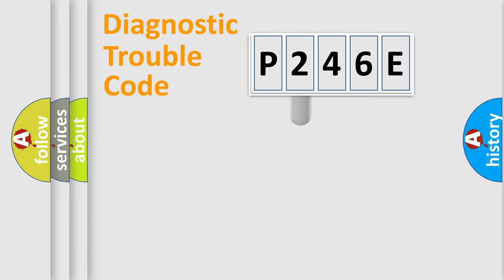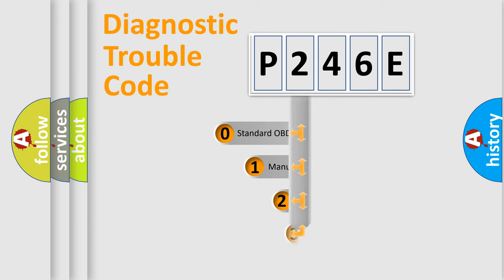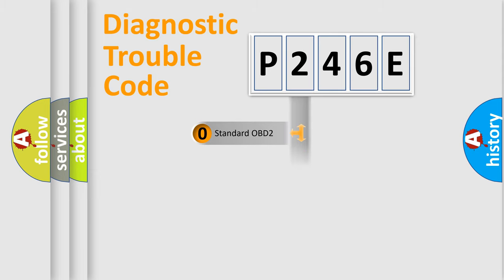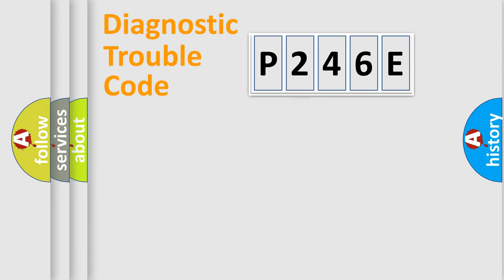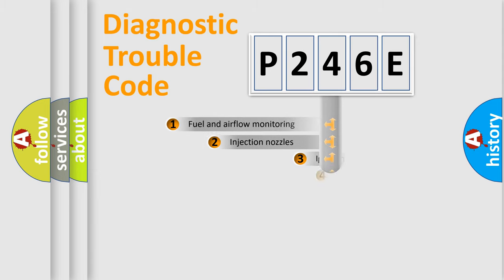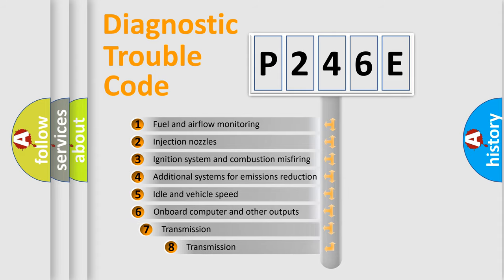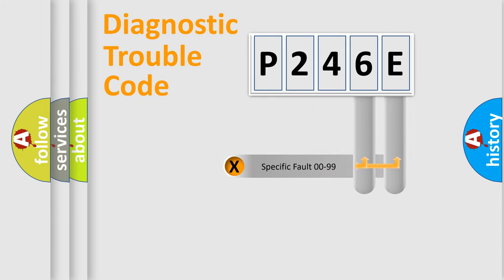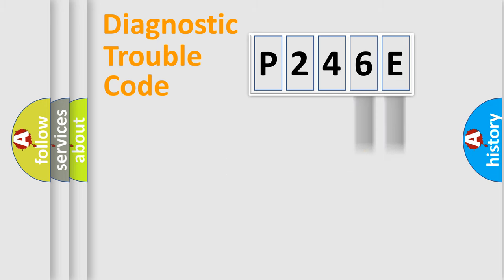This distribution is defined in the first character of the code. If the second character is expressed as zero, it is a standardized error. In the case of numbers 1, 2, or 3, it is a more specific expression of a car-specific error. The third character specifies a subset of errors. This distribution is valid only for the standardized DTC code. Only the last two characters define the specific fault of the group.